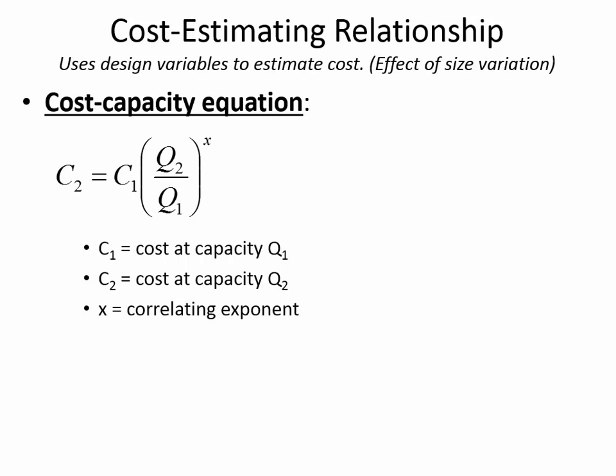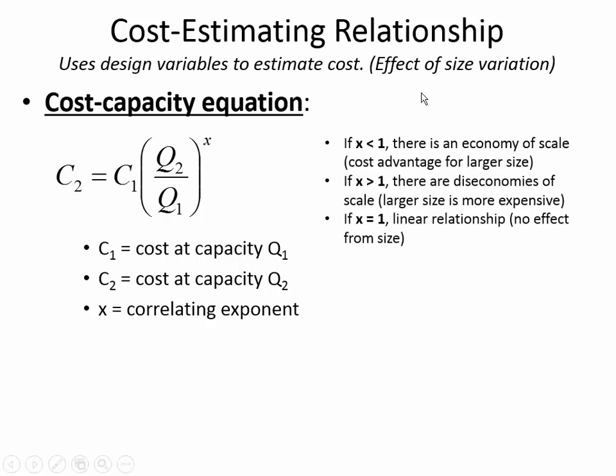One of the ways we can estimate costs is by using the ratio of the productivity of a machine or the ratio of the size of equipment. For example, a passenger jet that holds 50 people compared to one that carries 100 people — it's not as simple as just saying you double the size, you double the price. That's why there's an exponent here. This exponent says the relationship between size and price is sometimes not linear.